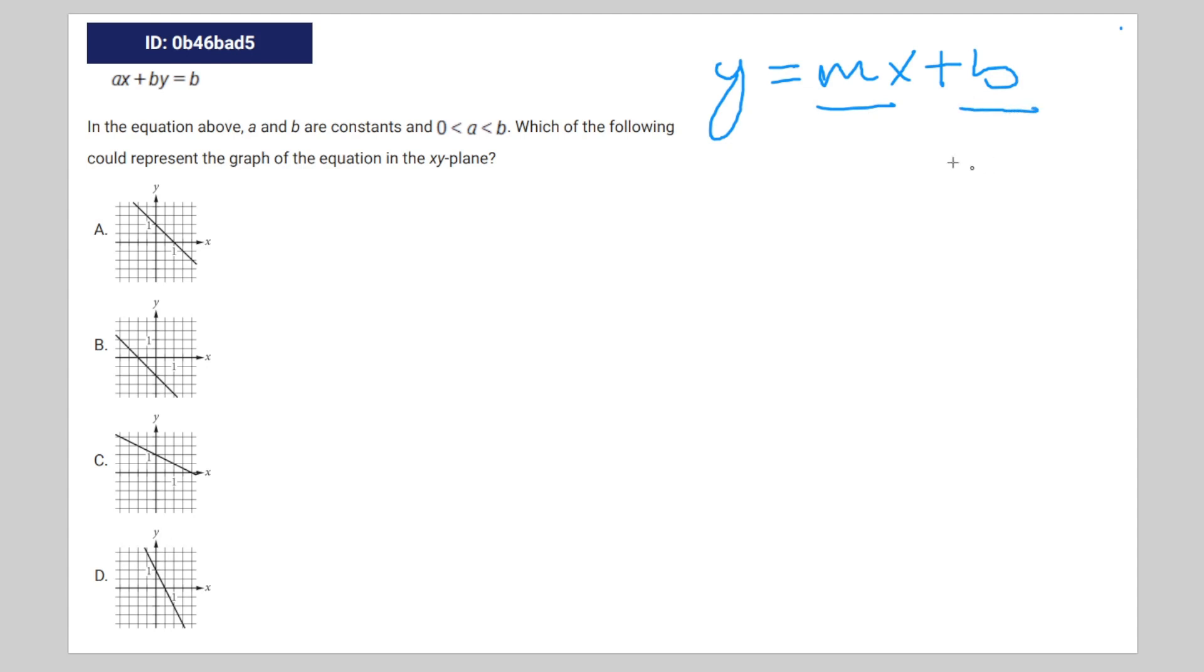So we're going to move the x to the other side of the equation. By equals negative ax plus b. And if I divide the whole thing by b, you get negative a over b times x plus b over b, which is just 1. So it can't be answer choice B because that doesn't have a y-intercept of 1.